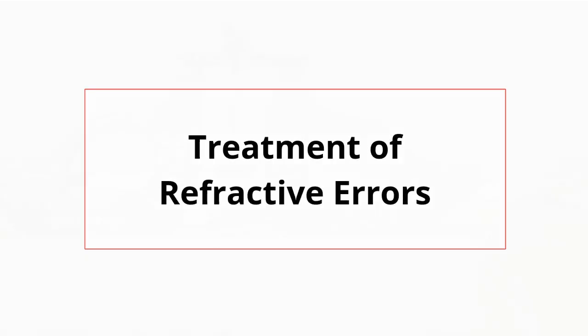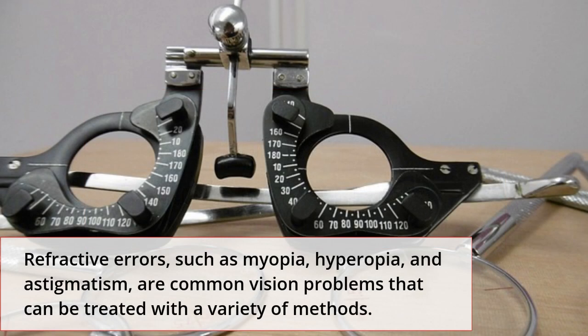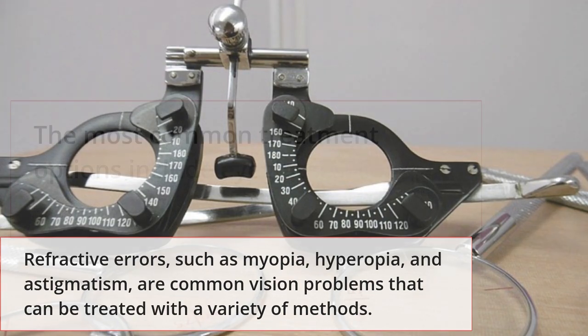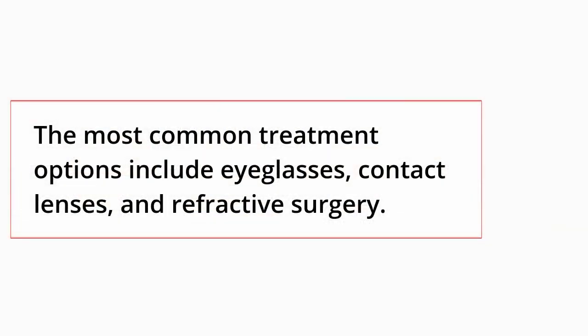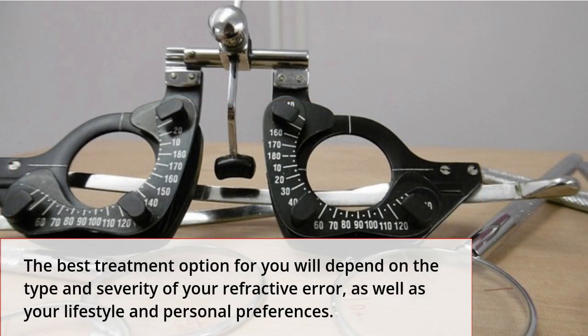Refractive errors such as myopia, hyperopia, and astigmatism are common vision problems that can be treated with a variety of methods. The most common treatment options include eyeglasses, contact lenses, and refractive surgery. The best treatment option for you will depend on the type and severity of your refractive error, as well as your lifestyle and personal preferences.